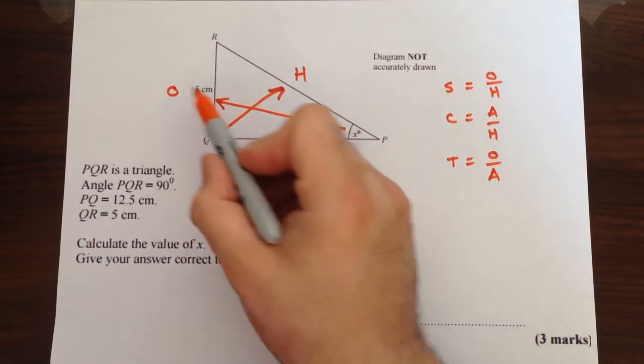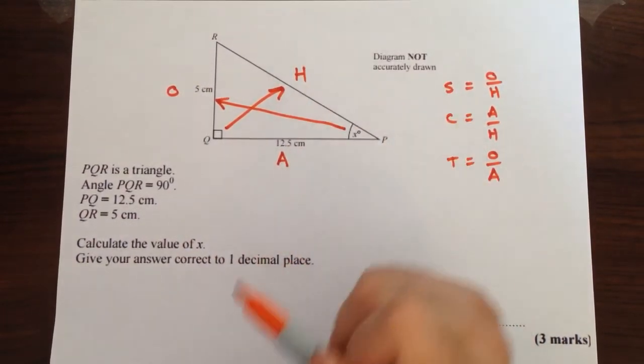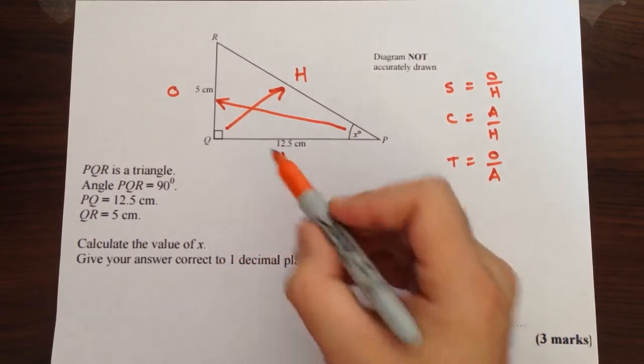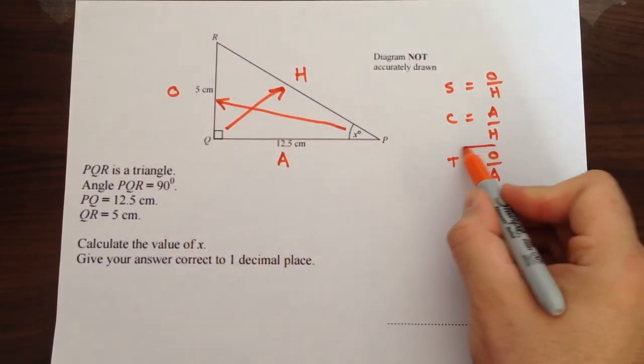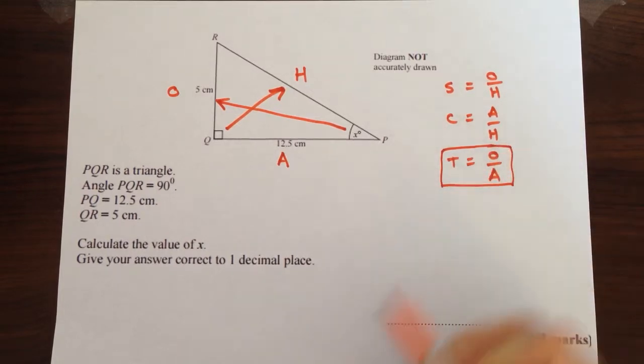So in this question we know the opposite and we know the adjacent. We don't know anything about the hypotenuse. So we need an equation here that contains O and A, which has to be tan.